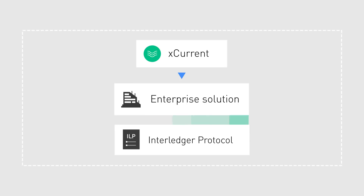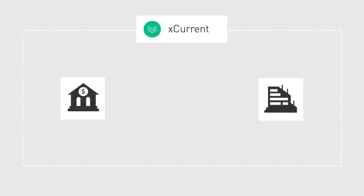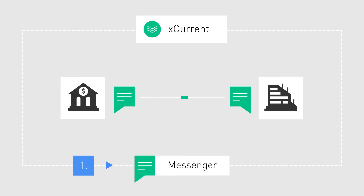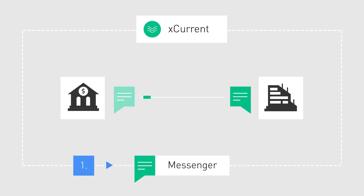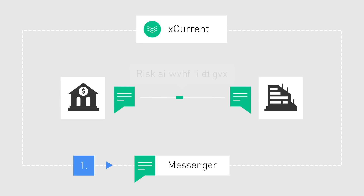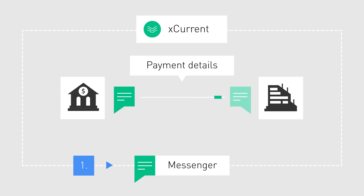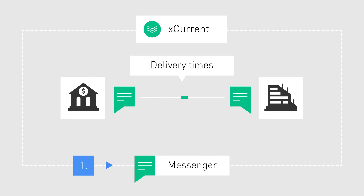Xcurrent consists of four different components. The Xcurrent messenger provides peer-to-peer communication between connected RippleNet financial institutions. It is used to exchange information regarding risk and compliance, fees, FX rates, payment details, and expected time of funds delivery.